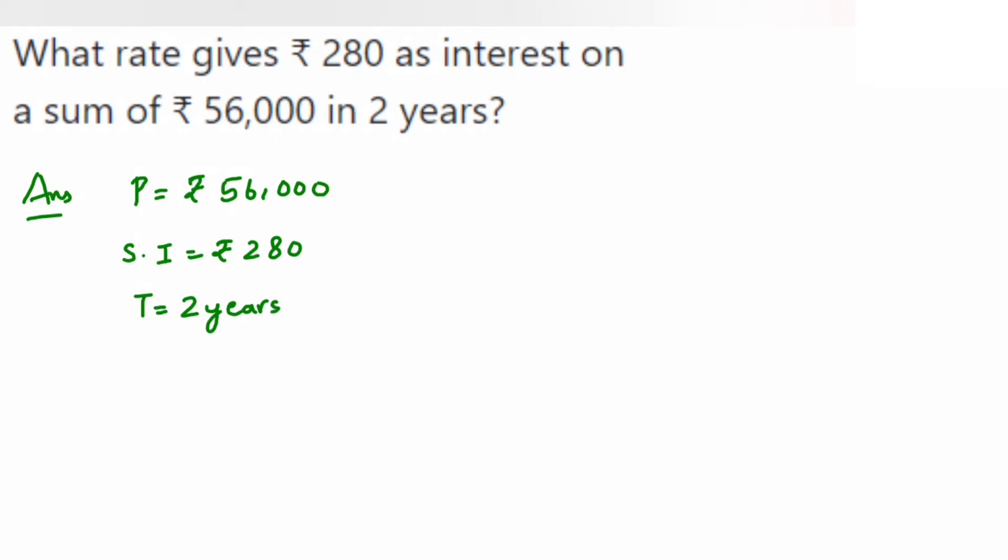We have two ways of doing it. Either use the S.I. formula, that is simple interest is equal to P into R into T upon 100, or one more formula for doing it.